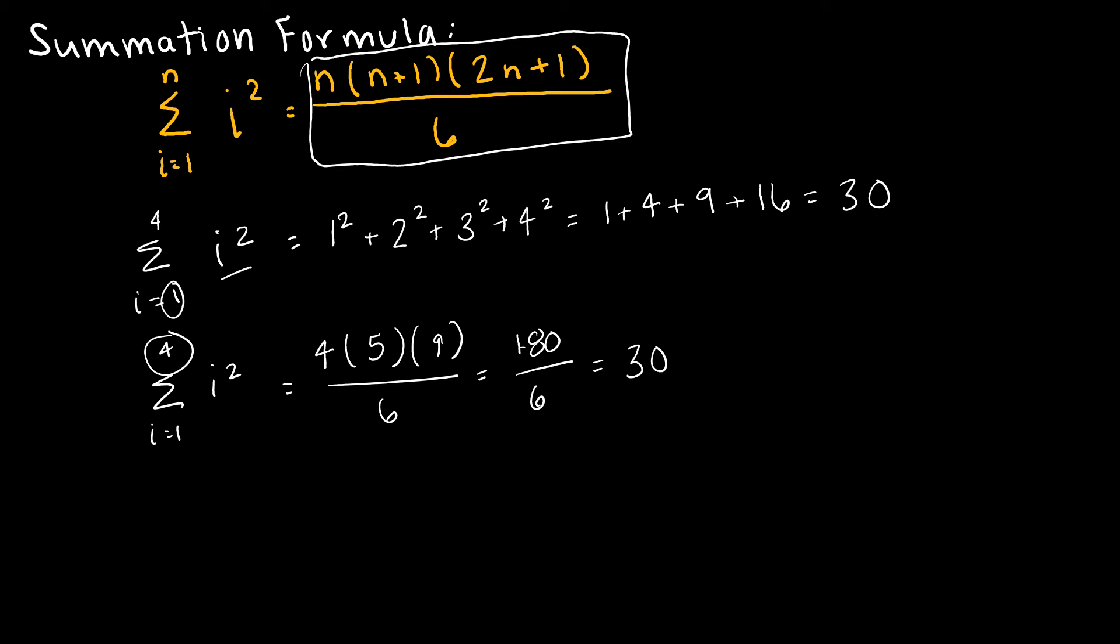Now, before we move on, I do want to point out that though these formula are great for exactly what we did here, which is finding the sum, they're also great because when we're working on proofs and things of that nature, I am able to replace the summation as i goes from 1 to n of i squared with its equivalent counterpart, n times n plus 1 times 2n plus 1 divided by 6.